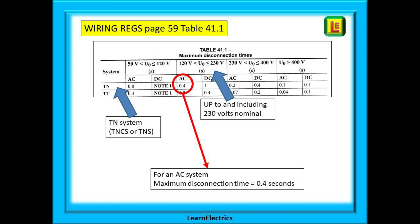We will stay with our type B 32 amp BS EN 60898 MCB. Looking at page 59 in the wiring regs book, table 41.1 shows us that during a fault a TN final circuit with a nominal voltage over 120V AC and up to and including 230V AC should disconnect within 0.4 seconds. This is to protect persons and livestock from the dangers of electric shock. Manufacturers design devices to comply with a standard stating that the device must disconnect in less than 0.4 seconds if a fault current of a certain size passes through it. Different types and sizes of breaker will have different current requirements.